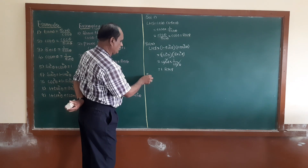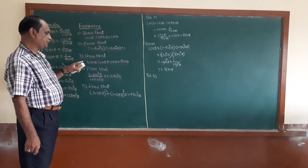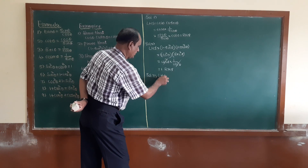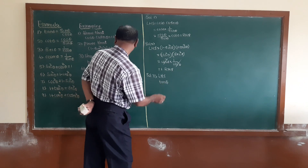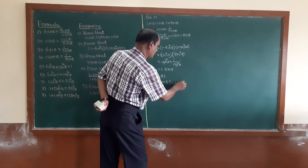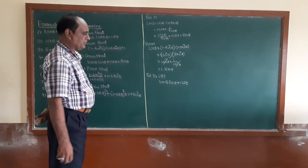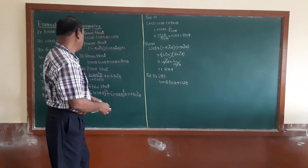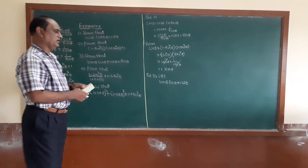Now the solution for the third example. The third example: show that tan theta times sine theta plus cos theta is equal to sec theta. LHS means tan theta. The tan theta formula is sine theta divided by cos theta.